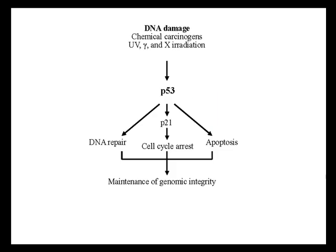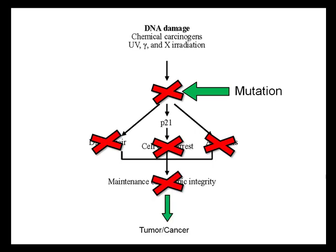An example of this is p53. p53 is a tumor suppressor protein that maintains DNA repair, induces cell cycle arrest, or apoptosis — controlled cell death — whenever the integrity of the genome has been lost because of DNA damage. In essence, p53 prevents cells with damaged DNA from dividing. A mutation in p53 often leads to a loss of all of these functions and can ultimately lead to uncontrolled cell division and subsequently cancer. Strong conservative selection pressures prevent a mutated gene like a mutated p53 gene from propagating throughout a population by negatively selecting those individuals with a dysfunctional gene.